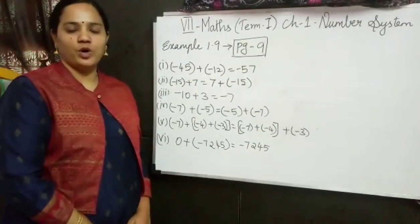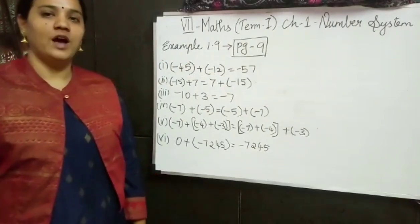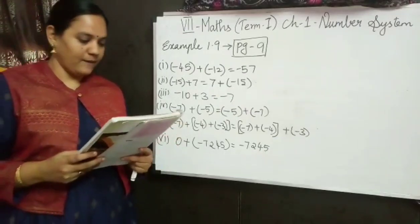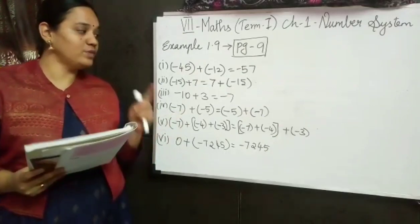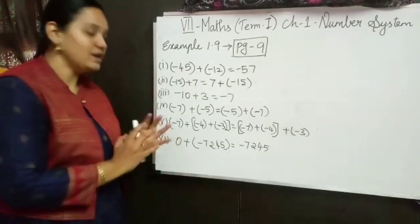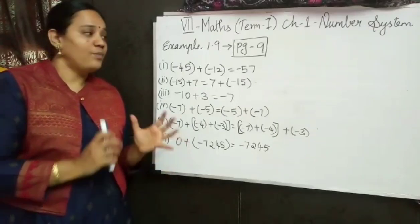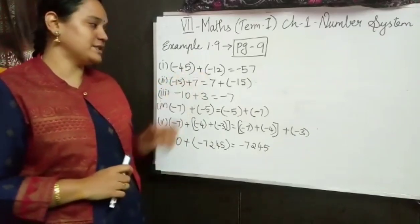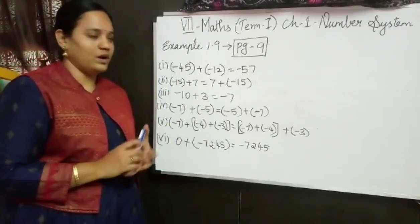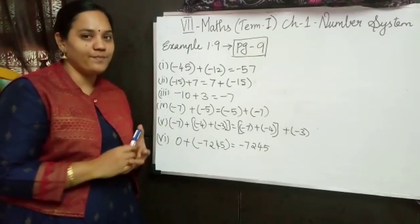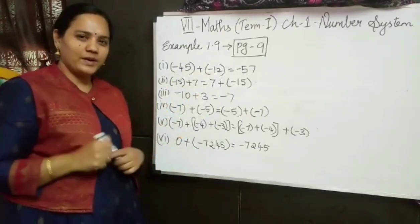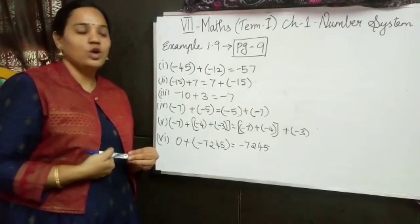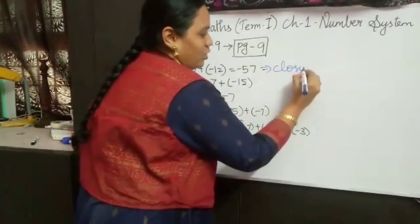Now we are going to see one example problem based on the properties of addition. This is example 1.9 from page number 9. Mention the property for the following equations — we have 6 options and we have to write the appropriate property for each equation. The first one: minus 45 plus minus 12 is equal to minus 57. After seeing this problem, you can say this is of the form a plus b is equal to c. So this equation belongs to closure property.